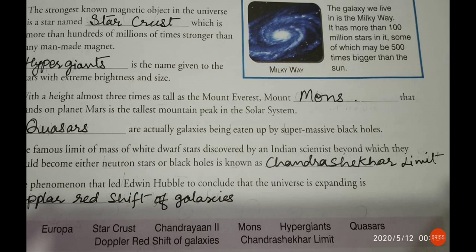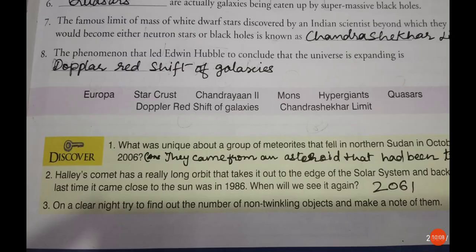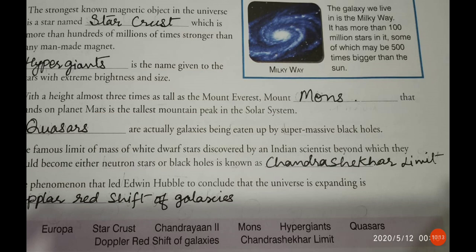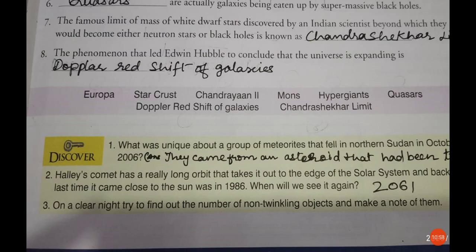Quasars are actually galaxies being eaten up by supermassive black holes. The famous limit of the mass of a white dwarf star discovered by an Indian scientist, beyond which they would become either a neutron star or a black hole, is known as the Chandrasekhar limit. The phenomenon that led Edwin Hubble to conclude that the universe is expanding is the Doppler red shift of galaxies. You can see the boxes here, match the spellings and match the answers as well.